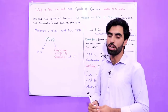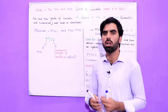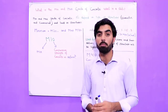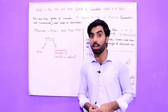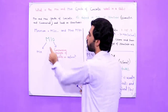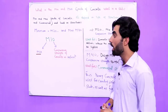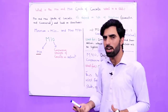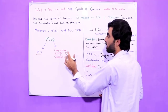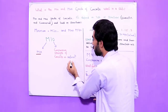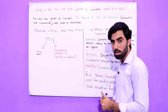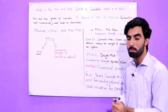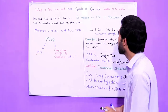Now I will briefly introduce grade of concrete. You can see grades like M5, M7.5, M10, M15, M20, and so on — these are the grades of concrete. Here 'M' stands for mix, and the number — for example 10 in M10, or 15 in M15, or 20 in M20 — stands for the compressive strength of concrete in Newton per mm squared, which is also called Mega Pascal.